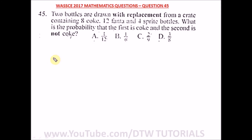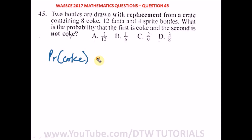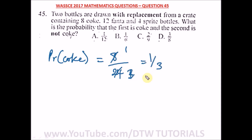Question 45 of WAEC 2017 Mathematics past questions. Two bottles are drawn with replacement from a crate containing 8 Coke, 12 Fanta, and 4 Sprite bottles. What is the probability that the first is Coke and the second is not Coke? The total number of bottles is 8 plus 12 plus 4, which equals 24. The probability the first is Coke is 8 over 24, which simplifies to 1 over 3.